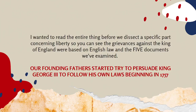The beginning of the Declaration says: 'We hold these truths to be self-evident, that all men are created equal, that they are endowed by their Creator with certain unalienable rights, that among these are life, liberty, and the pursuit of happiness.' Now listen to this language: 'That to secure these rights, governments are instituted among men, deriving their just powers from the consent of the governed. That when any form of government becomes destructive of these ends, it is the right of the people to alter or to abolish it and institute new government.'